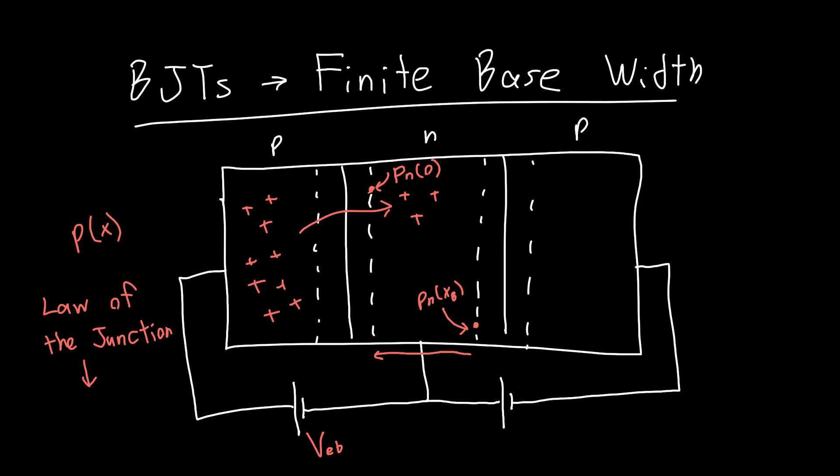And initially, we said, well, I think we can just draw a straight line between the two if we assume that XB is small. In other words, XB is much less than the diffusion length for holes in this region.